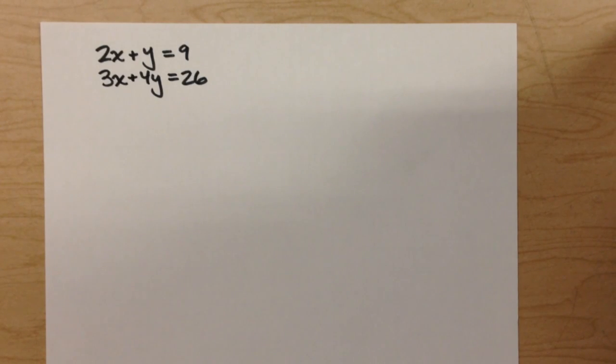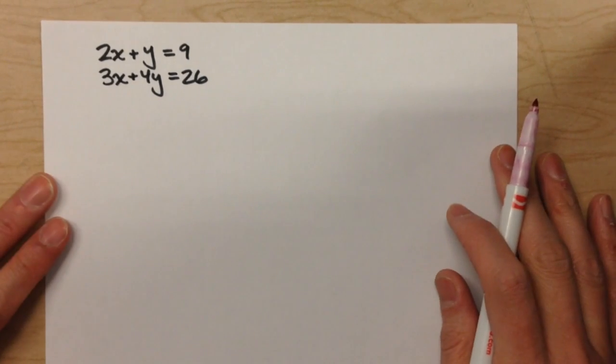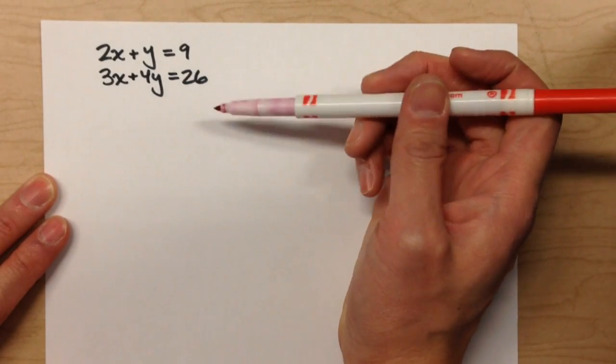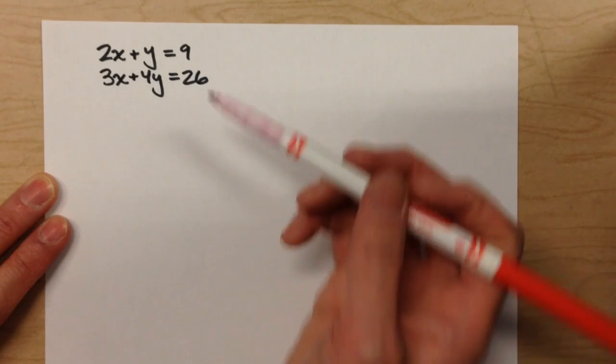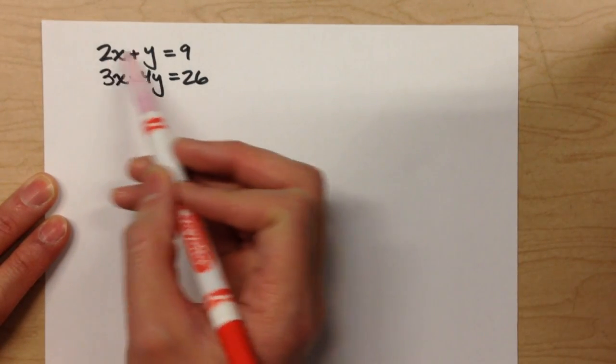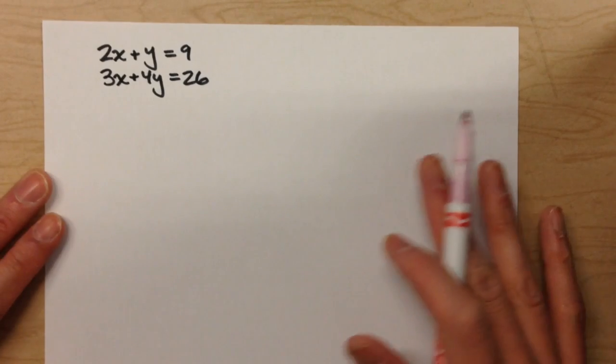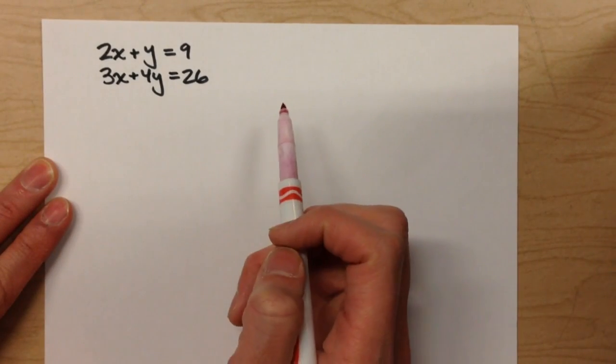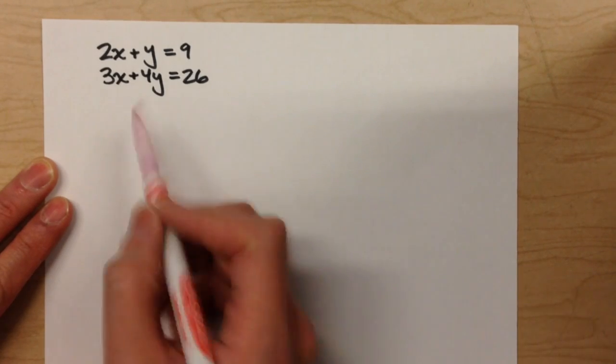So today we're solving systems of equations using algebra, but notice in today's equation both of them are in standard form, meaning both have x and y on one side and just a number on the other. Up until now we always had one equation where it said y equals, so we could substitute in. This time we don't have that.